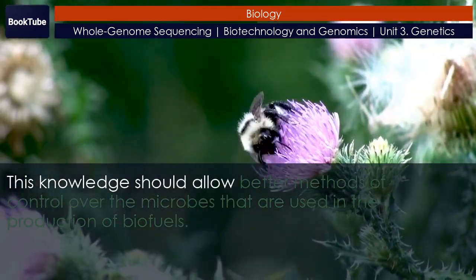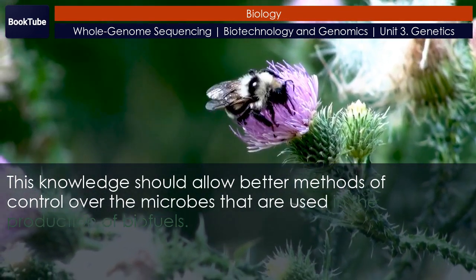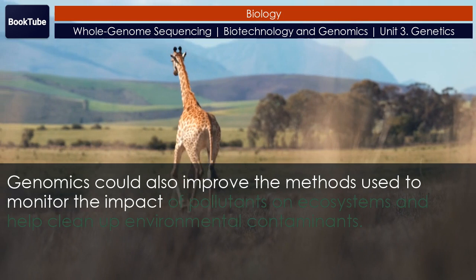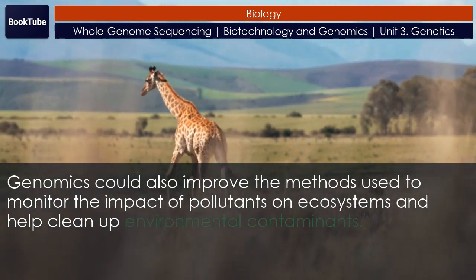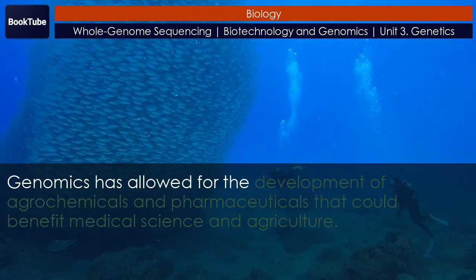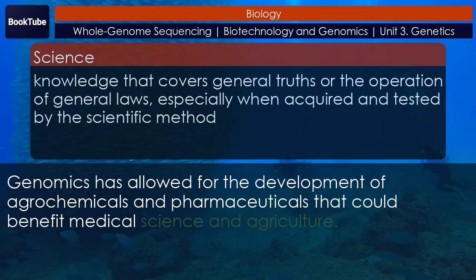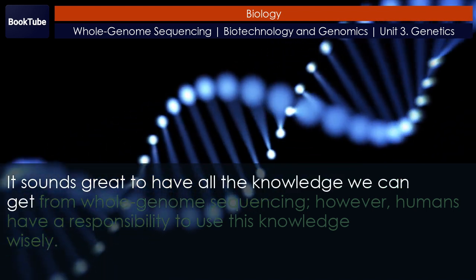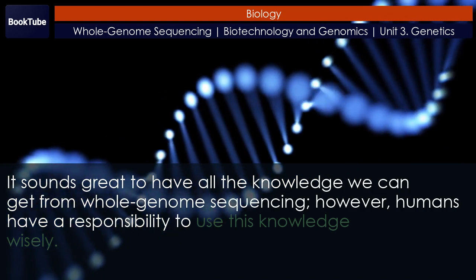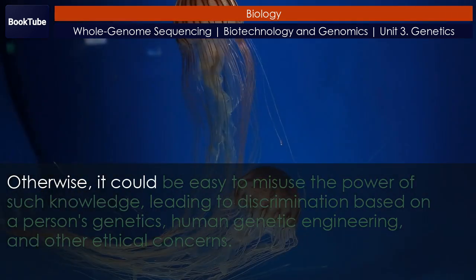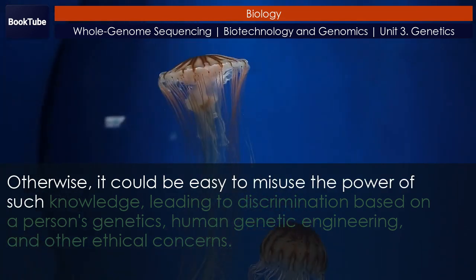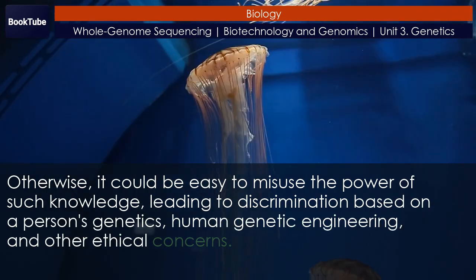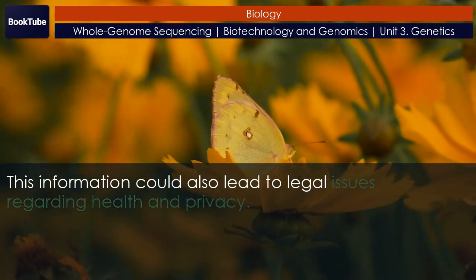This knowledge should allow better methods of control over the microbes used in the production of biofuels. Genomics could also improve methods used to monitor the impact of pollutants on ecosystems and help clean up environmental contaminants. Genomics has allowed for the development of agrochemicals and pharmaceuticals that could benefit medical science and agriculture. However, humans have a responsibility to use this knowledge wisely; otherwise, it could be easy to misuse the power of such knowledge, leading to discrimination based on a person's genetics, human genetic engineering, and other ethical concerns. This information could also lead to legal issues regarding health and privacy.